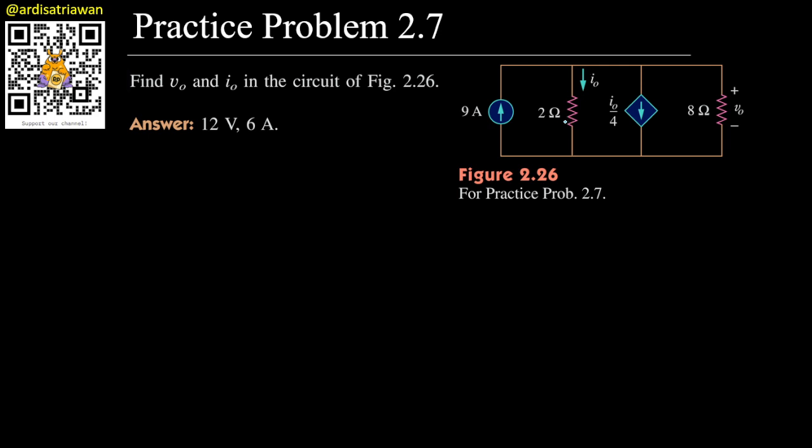I think the easiest way to do this is by using nodal analysis or by using KCL, because we only have a single node here. Let's set the bottom node here as our ground. The ground means that the voltage here will be zero volts. We assume that this will be our zero volt. And the other node here, the top node, let's name this node as node A.